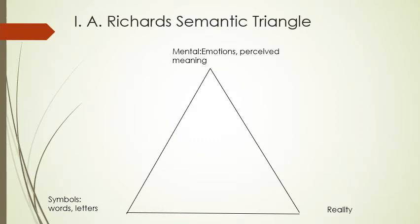Looking at I.A. Richards' semantic triangle — we talk about this because it's a great tool to help understand how we communicate and why it's important to be specific, especially in speeches. In the triangle you can place the way we communicate: how symbolic it is is one point, how close to reality it is is another, and then our mental and emotional place where we encode and decode words and interpret reality.